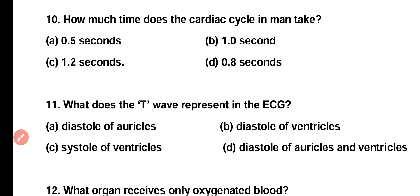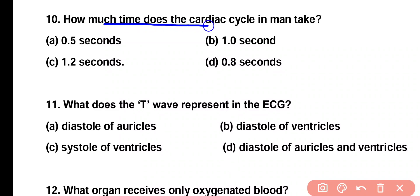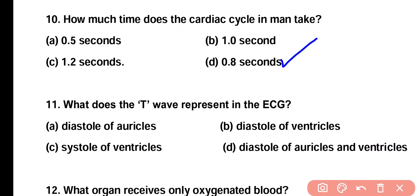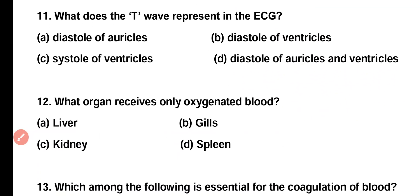Question number 10. How much time does the cardiac cycle in humans take? 0.5 second, 1 second, 1.2 second, or 0.8 second? Correct answer is option D. The cardiac cycle in humans is complete in 0.8 seconds.